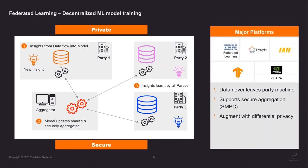In a COVID hospital example: in one region, new COVID case insights are observed. These translate to model updates that are sent centrally without compromising patient privacy, and those insights become available to all nodes and all hospitals. Every party can benefit from a unique insight while keeping the data private. So federated learning is a decentralized machine learning approach where privacy comes along with it because data stays on the individual node.